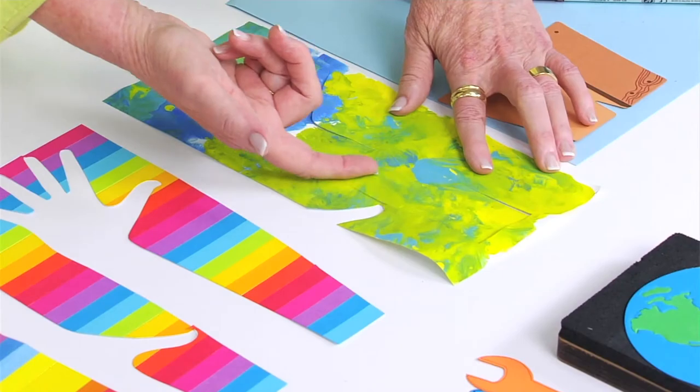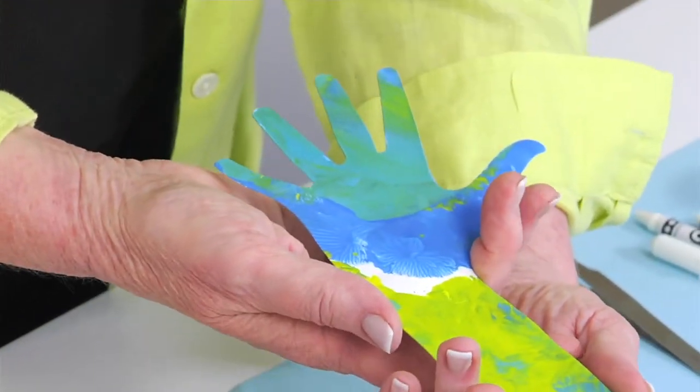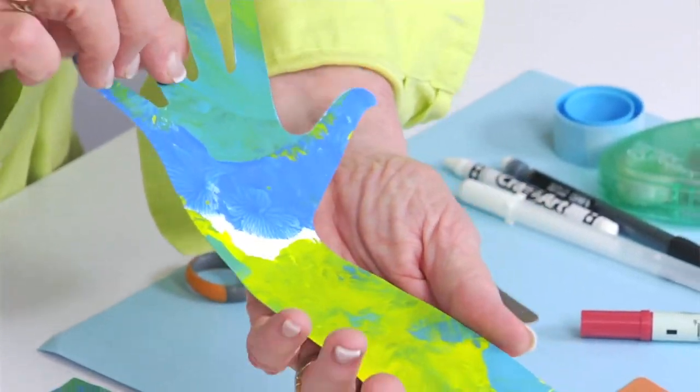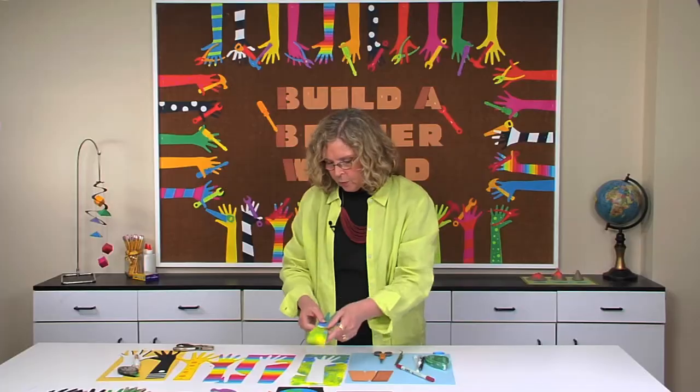And then once they have all of their paper dry, then you go ahead and you die cut it so that you end up with their design on the arm that's now ready for them to add any other detail they want and to do the tool that the hand will be holding.